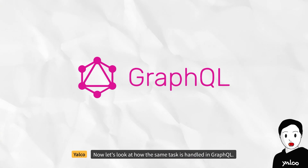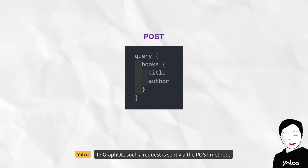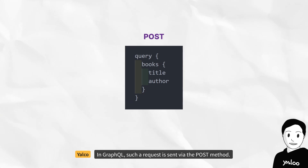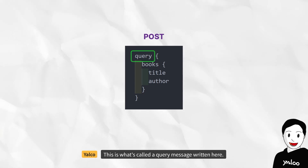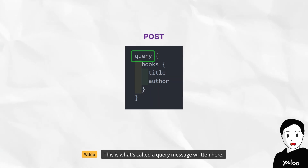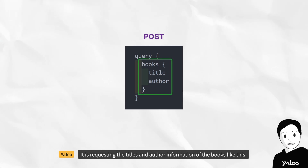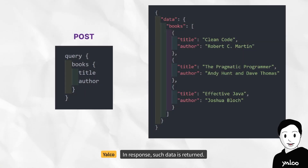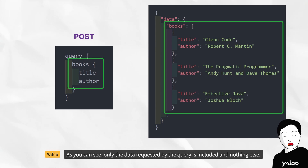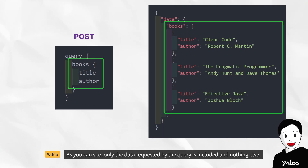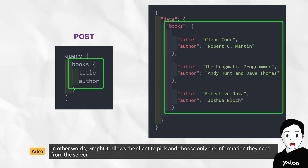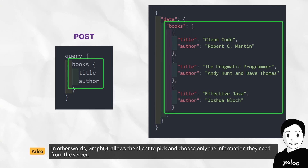Now let's look at how the same task is handled in GraphQL. In GraphQL, such a request is sent via the POST method using what's called a query message. It requests only the titles and author information of the books. In response, only the data requested by the query is returned and nothing else. In other words, GraphQL allows the client to pick and choose only the information they need from the server.